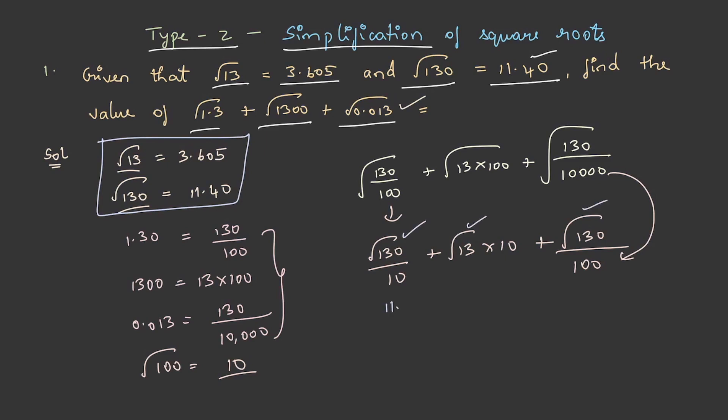It becomes 11.40/10 + 3.605×10 + 11.40/100, which equals 1.14 + 36.05 + 0.114 on simplification. The final value will be 37.304. This is the answer.